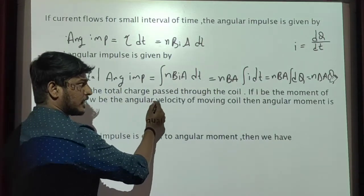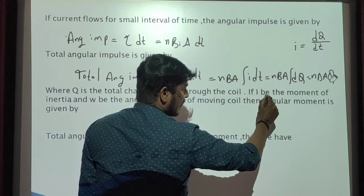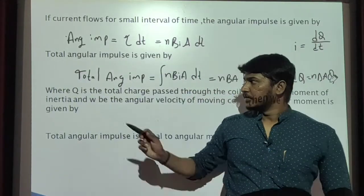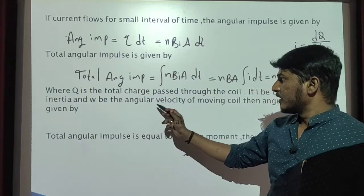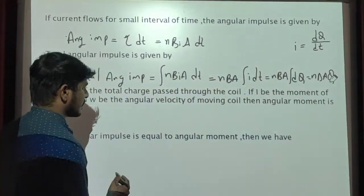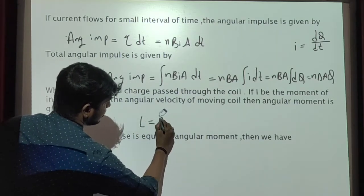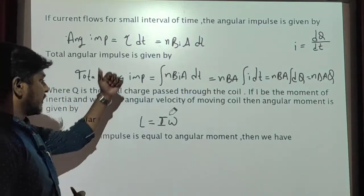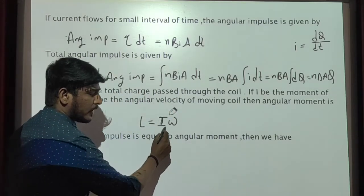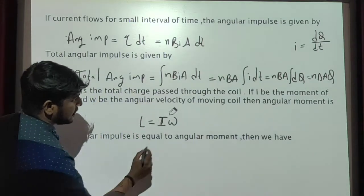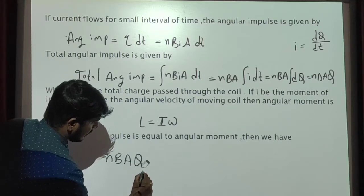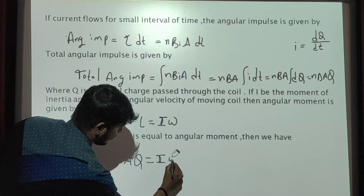Where q is the total charge passed through the coil. If I be the moment of inertia and omega be the angular velocity of the moving coil, then angular momentum is given by L equals I omega. We need to remember that total angular impulse is equal to angular momentum. So this equation becomes N into B into A into q equals I omega.